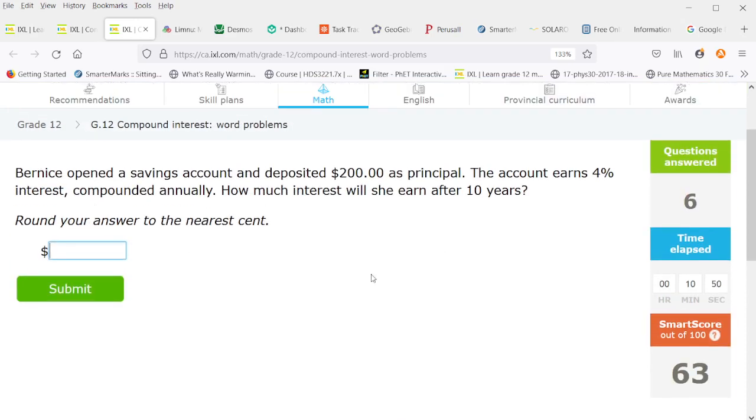So Bernice opened a savings account and deposited $200 as principal. The account earns 4% compounded annually. How much interest will she earn after 10 years? So this is another amount minus principal question. So we're going to have 200 times 1.04 to the 10. And we'll subtract 200 from that result. She'll earn $96.05.